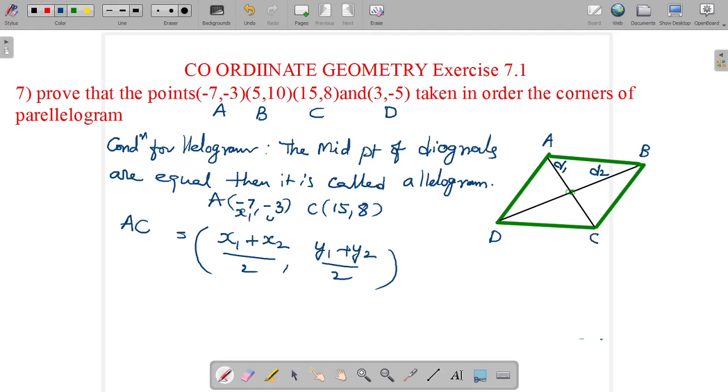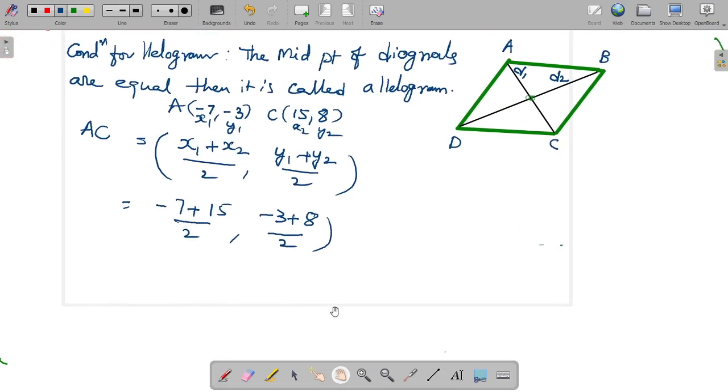This is x₁, y₁, x₂, y₂. So it is equal to x₁ is -7 plus x₂ is 15 by 2, y₁ plus y₂ by 2 means -3 plus 8 by 2. So the answer is 15 minus 7, 8 by 2, that is 4. 8 minus 3, 5 by 2.